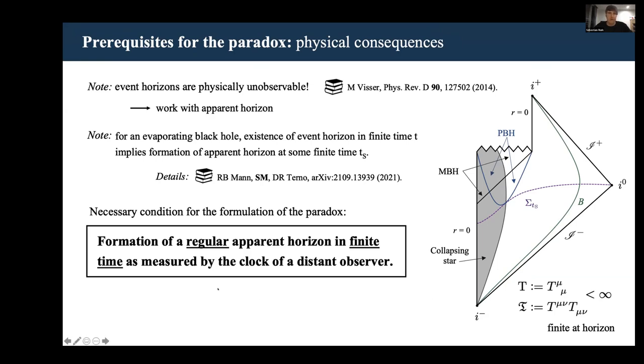The finite time formation according to distant observers is needed because otherwise the formation of the event horizon prior to evaporation of the black hole is impossible. And of course, we've argued on the previous slide that we need an event horizon to formulate the paradox.